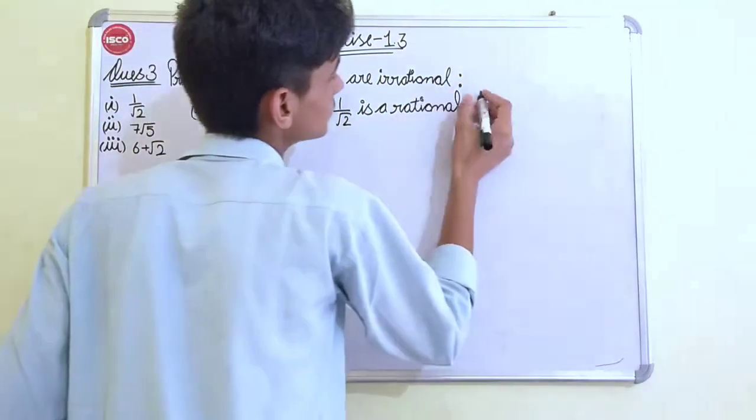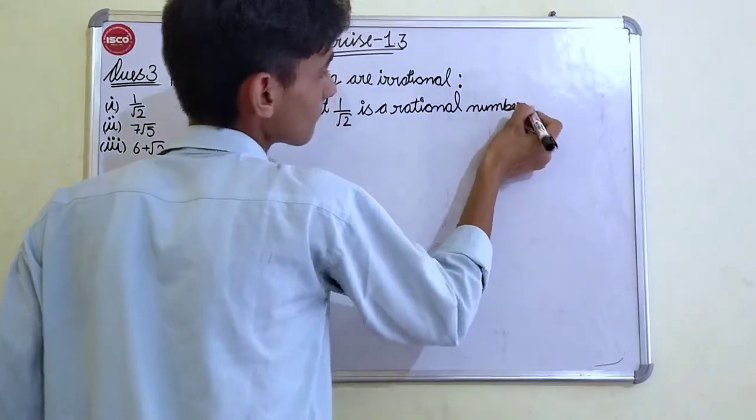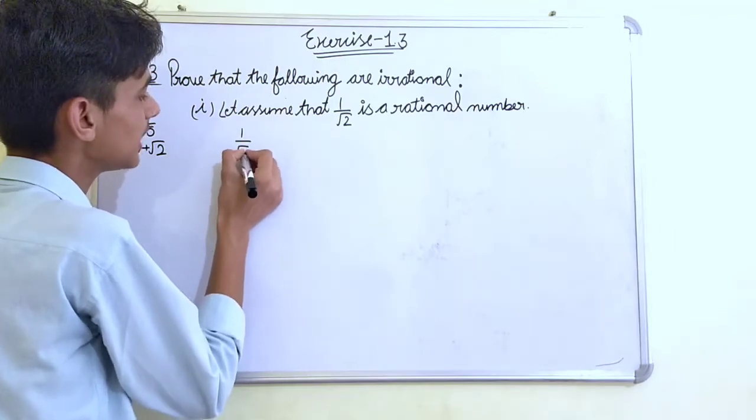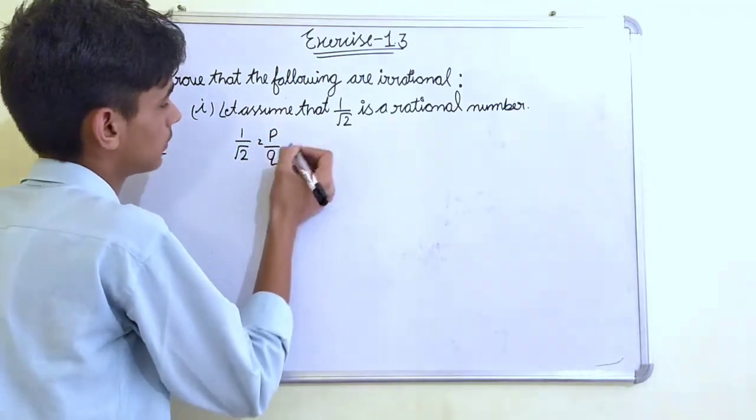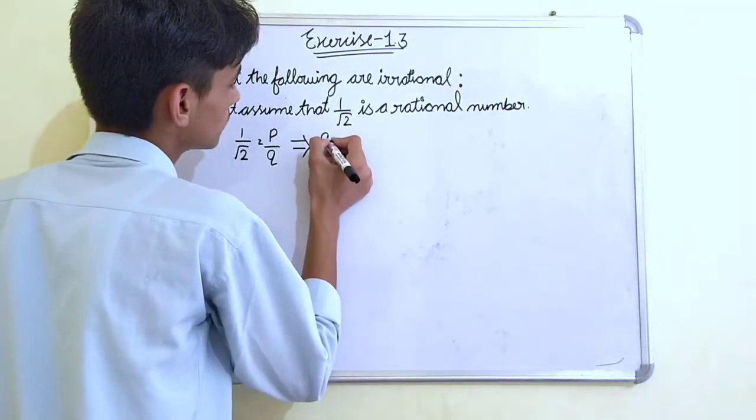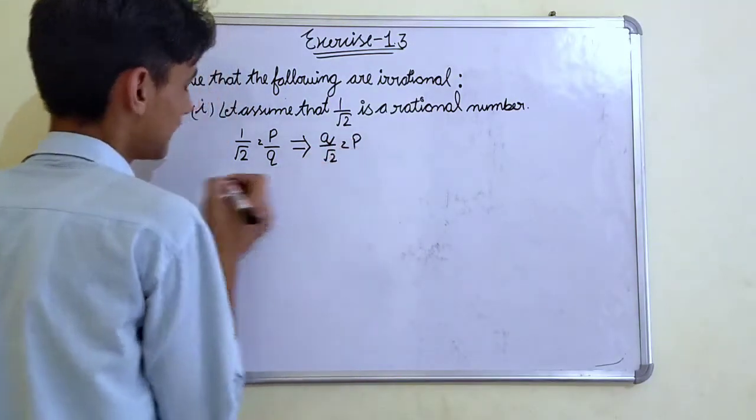If it is a rational number, then 1 by under root 2 is equal to P by Q. And we will take P on the left hand side. Q by under root 2 is equal to P.